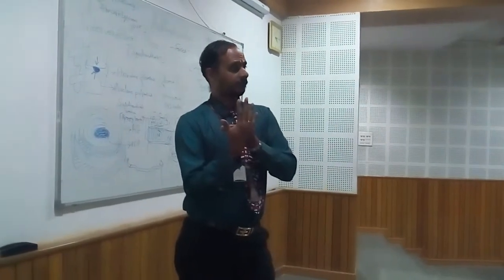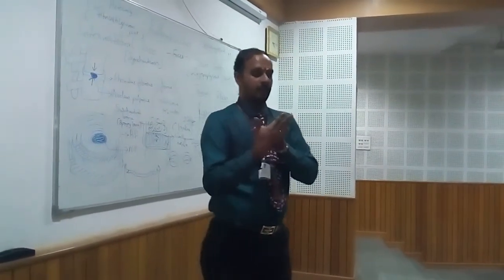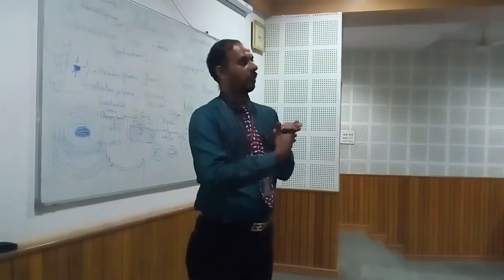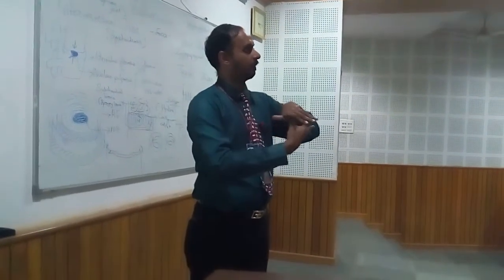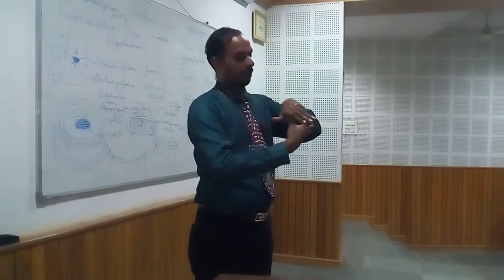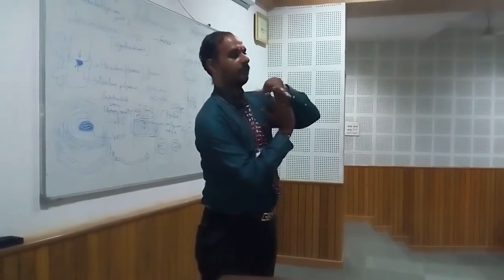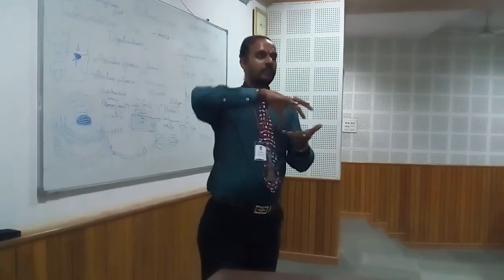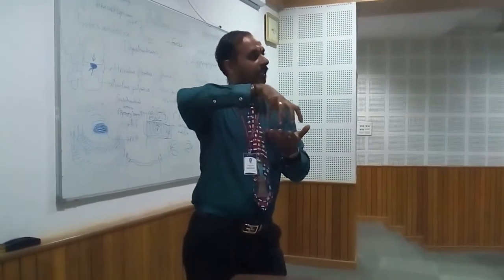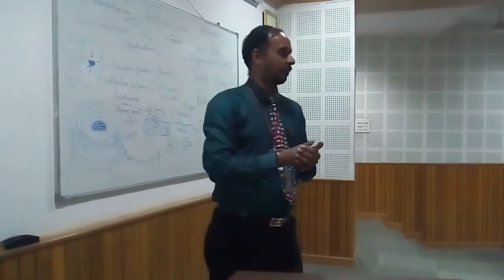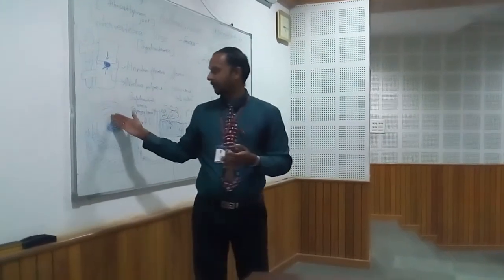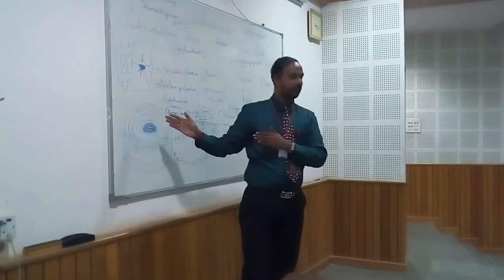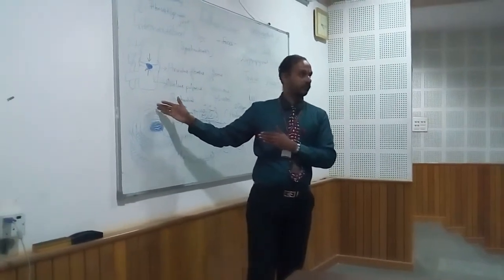For distraction, the fibers — initially oblique — straighten out and then resist the distraction force. Because of the oblique arrangement, the annulus fibrosus also resists torsion. One layer resists clockwise twisting, and the next layer resists anti-clockwise twisting. There is no defined number of layers — it can be any number, such as 12 or 15.